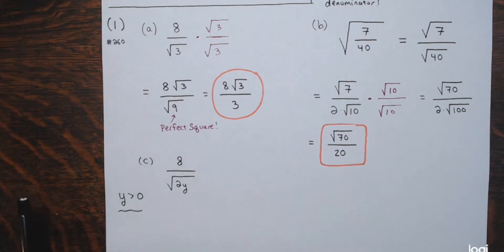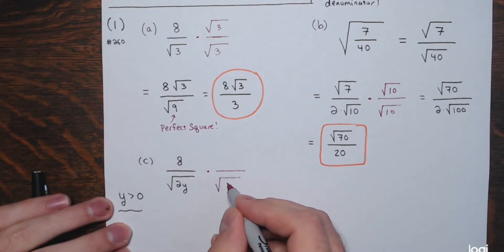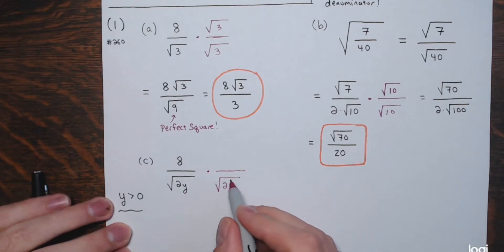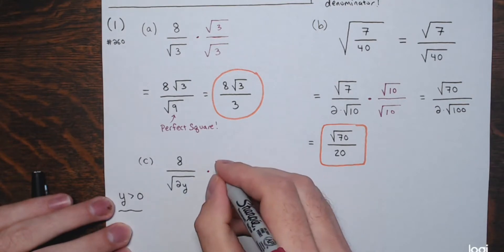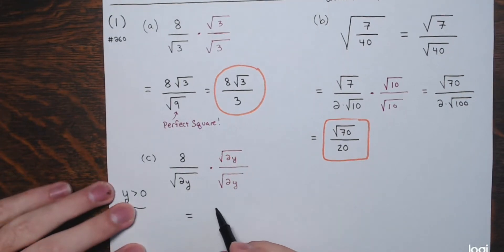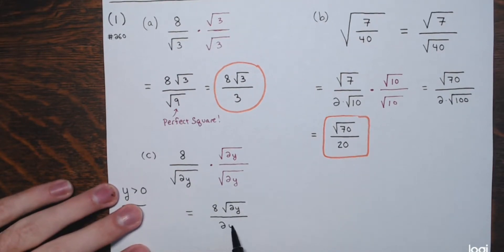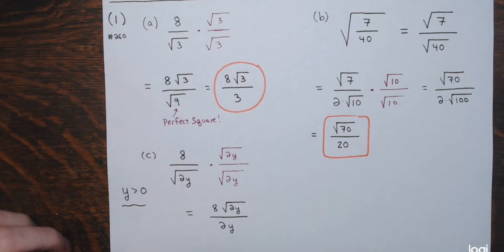Since y is positive, we can do the rationalization. I'm going to multiply the square root of 2y in the denominator by the square root of 2y, because I need one more factor of 2 and one more y to get 2 squared and y squared — perfect squares. Multiplying both numerator and denominator by the square root of 2y gives 8 times the square root of 2y in the numerator, divided by 2y in the denominator — that's the square root of 4y squared, which equals 2y, and no absolute values are needed since y is positive.